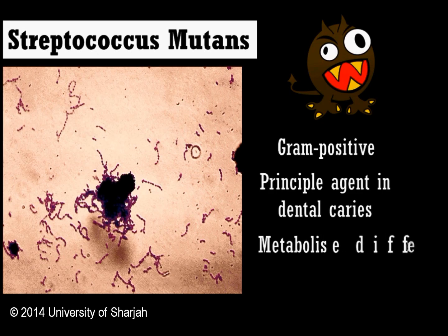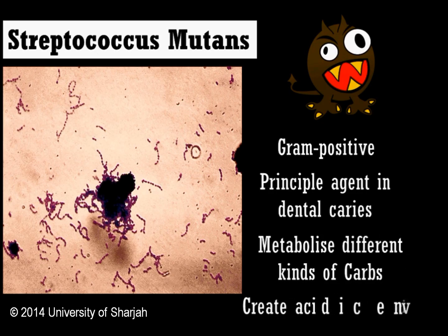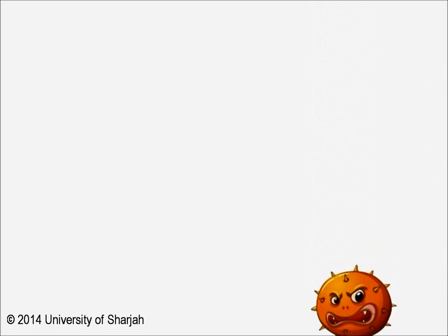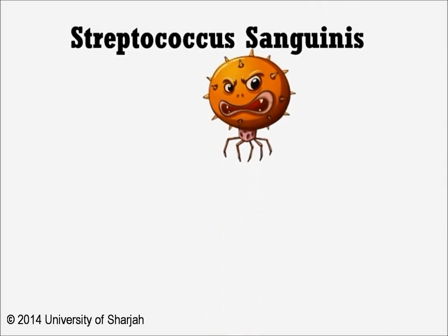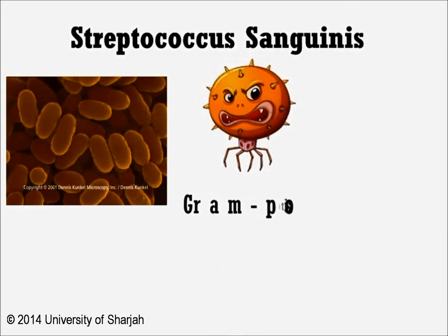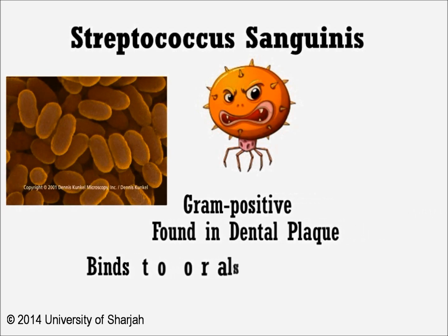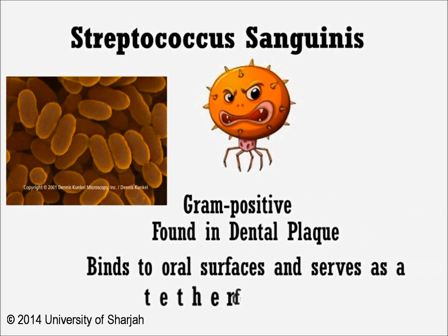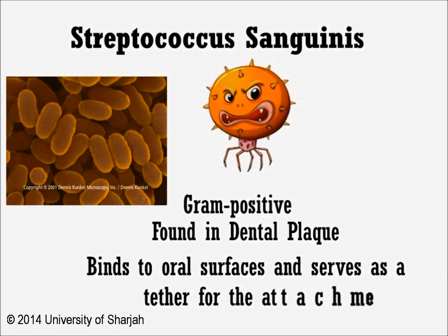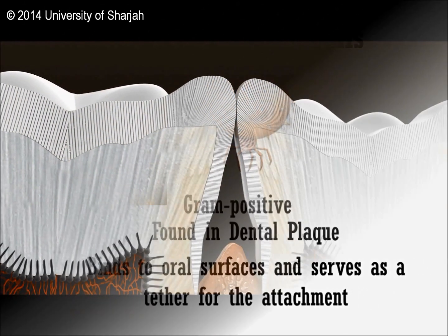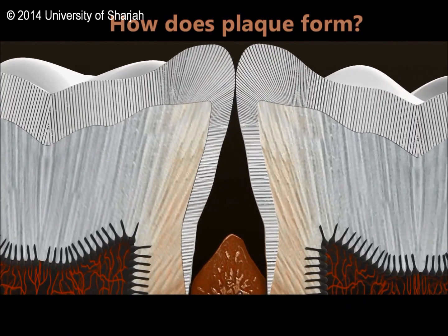Streptococcus mutans is a gram-positive, coccus-shaped anaerobic bacteria and is the principal agent of dental caries. Its growth and metabolism change the environmental conditions of the oral flora, enabling organisms to colonize and causing the formation of dental plaque. Streptococcus sanguis is a gram-positive, coccus-shaped anaerobic bacteria found in dental plaque; it binds to oral surfaces and serves as a tether for the attachment of other oral microorganisms.